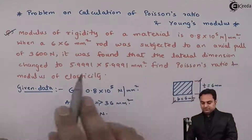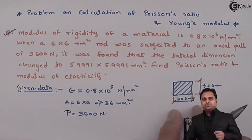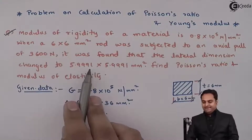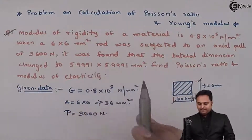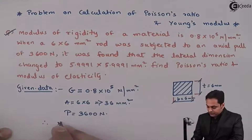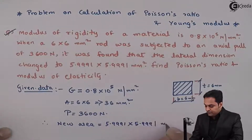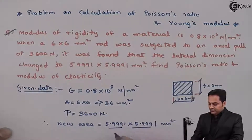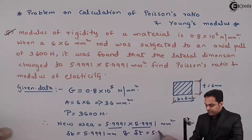It was found that the lateral dimension changed. When the load was applied, this width of 6 mm gets reduced — it becomes 5.9991 mm, and even the thickness is reduced to 5.9991 mm. So the new area is 5.9991 into 5.9991 mm square. Delta B is equal to 5.9991 mm and similarly delta T, the thickness, is 5.9991 mm.